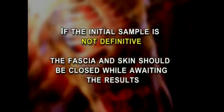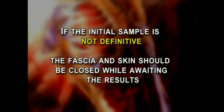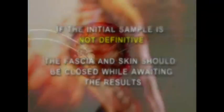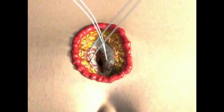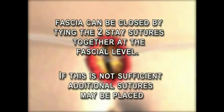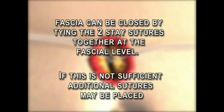The fascia can be closed by tying the two stay sutures together at the fascia level. If this is not sufficient, additional sutures may be placed. The skin may be closed with either sutures or staples.